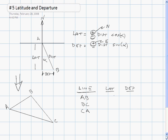So the latitude of AB is positive 1. The departure of AB is positive 2. You can see that.